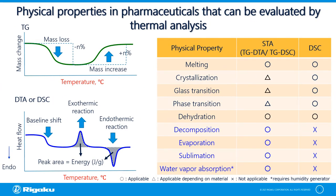Here is an illustration of a TG curve indicating mass loss and mass increase, and how the common reactions are represented in a DTA or DSC curve, both plotted against temperature. By combining both TG and DTA or DSC, we can elucidate reactions such as melting, crystallization, glass transition, phase transition, and dehydration, which can be measured by both STA and DSC. Other reactions such as decomposition, evaporation, sublimation, or water vapor absorption are recommended to be analyzed by STA.